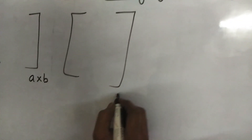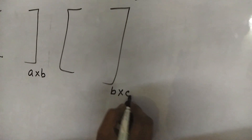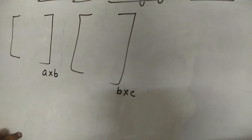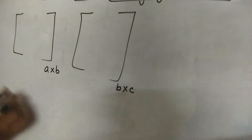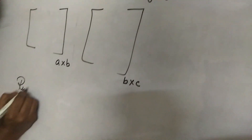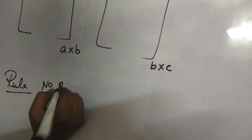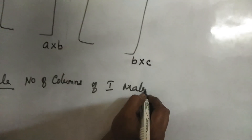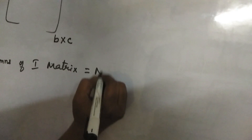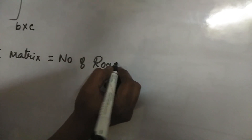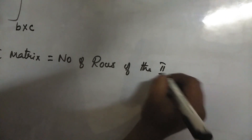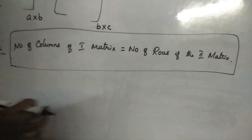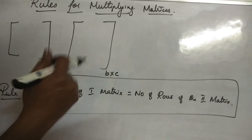Then the second one, we take B by C — number of rows B and number of columns C. Why have I taken it this way? The rule is: number of columns of the first matrix must be equal to number of rows of the second matrix.